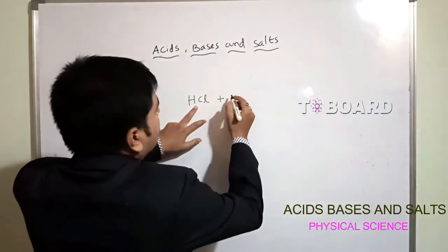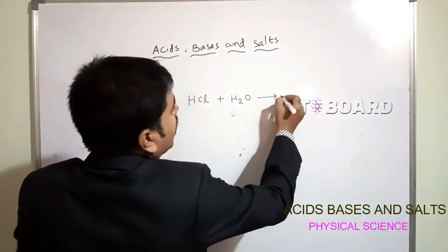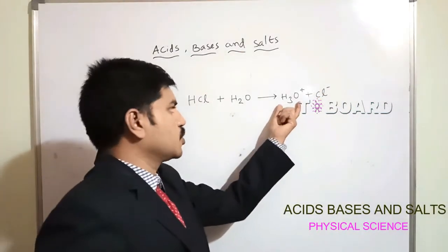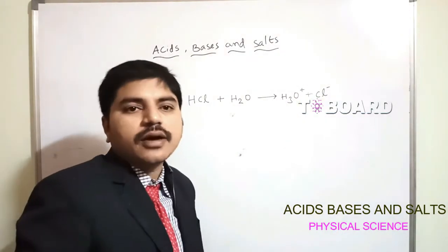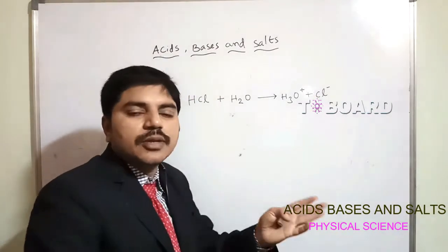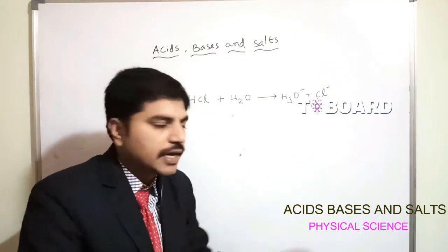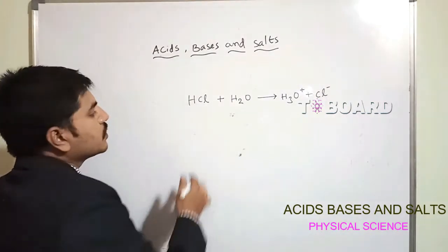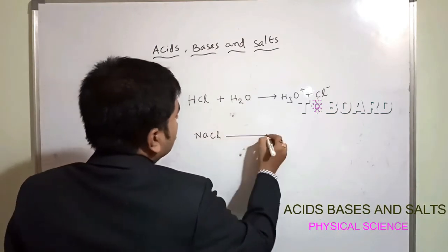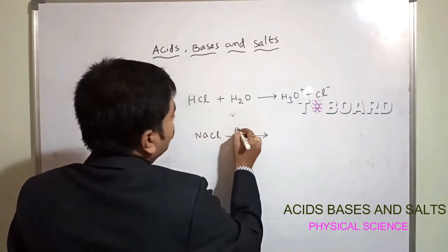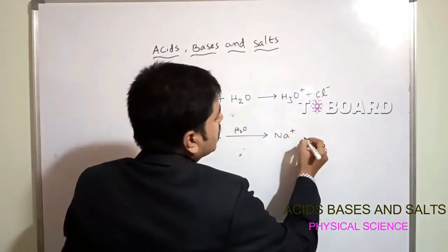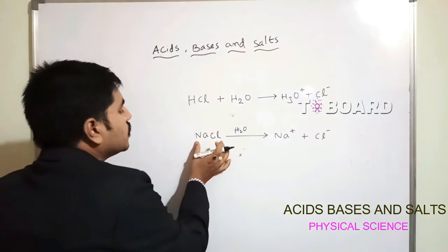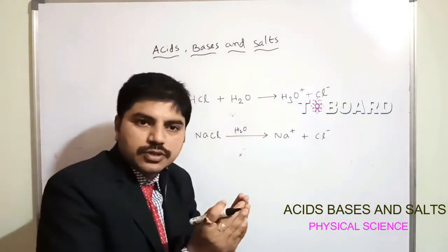When HCl mixes with water in our environment, it behaves as hydronium ions H₃O⁺ and chloride ions Cl⁻. Not only acids - bases also dissociate in water. For example, NaCl in presence of water gives Na⁺ and Cl⁻. Any compound in presence of water divides into cations and anions.